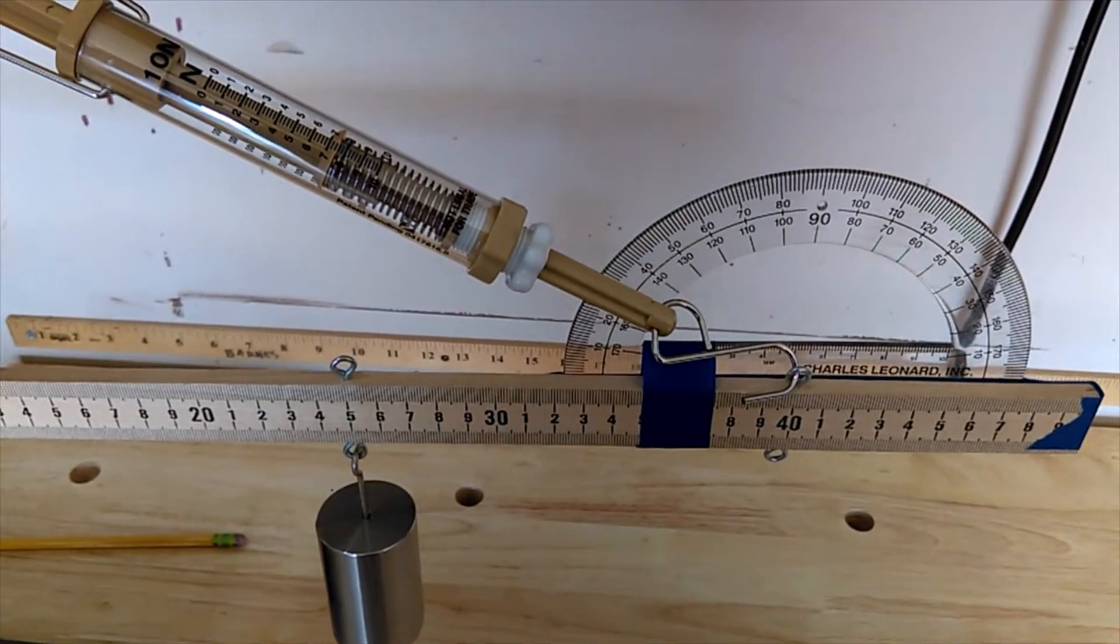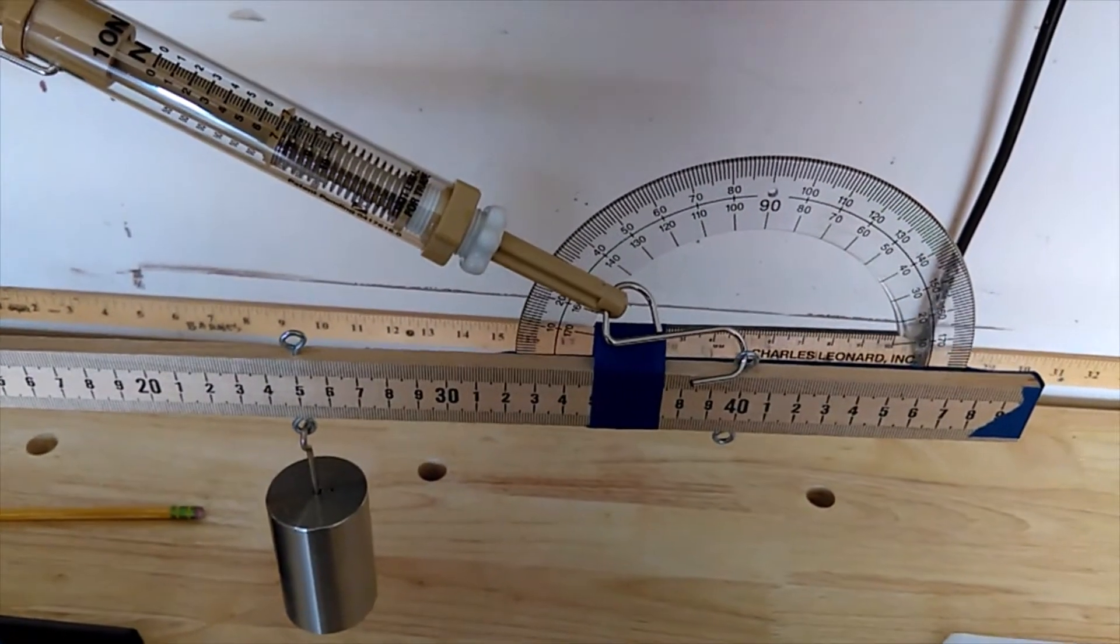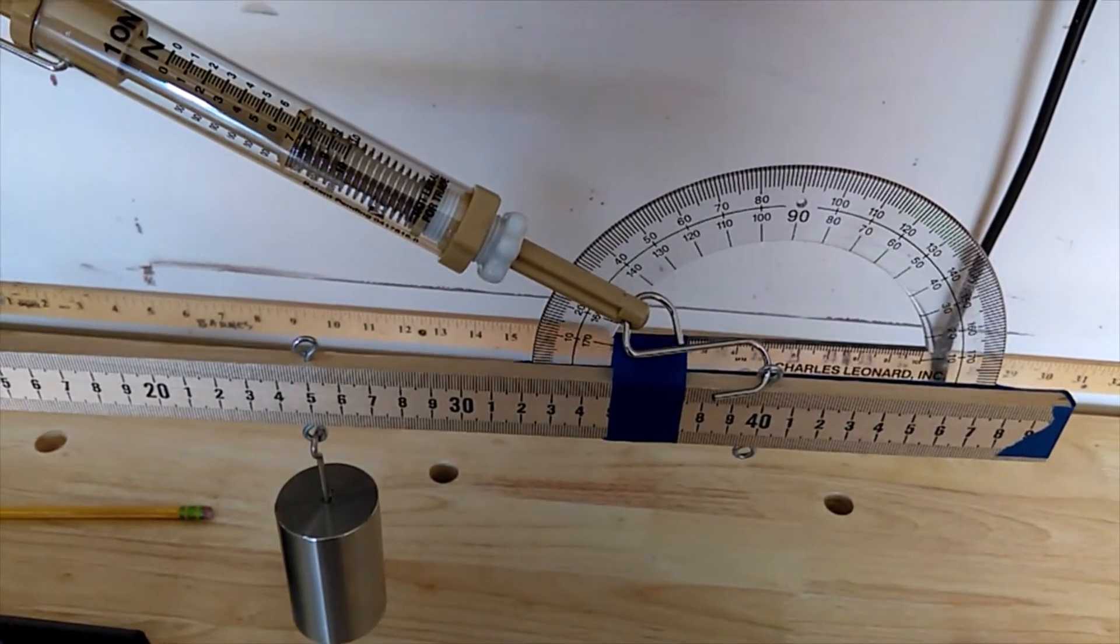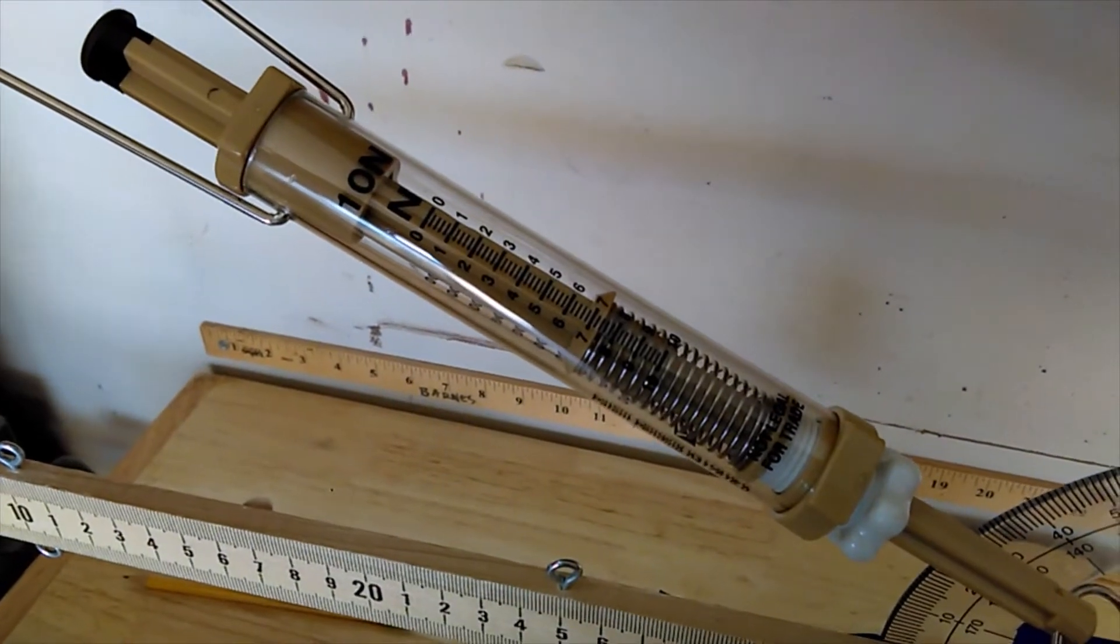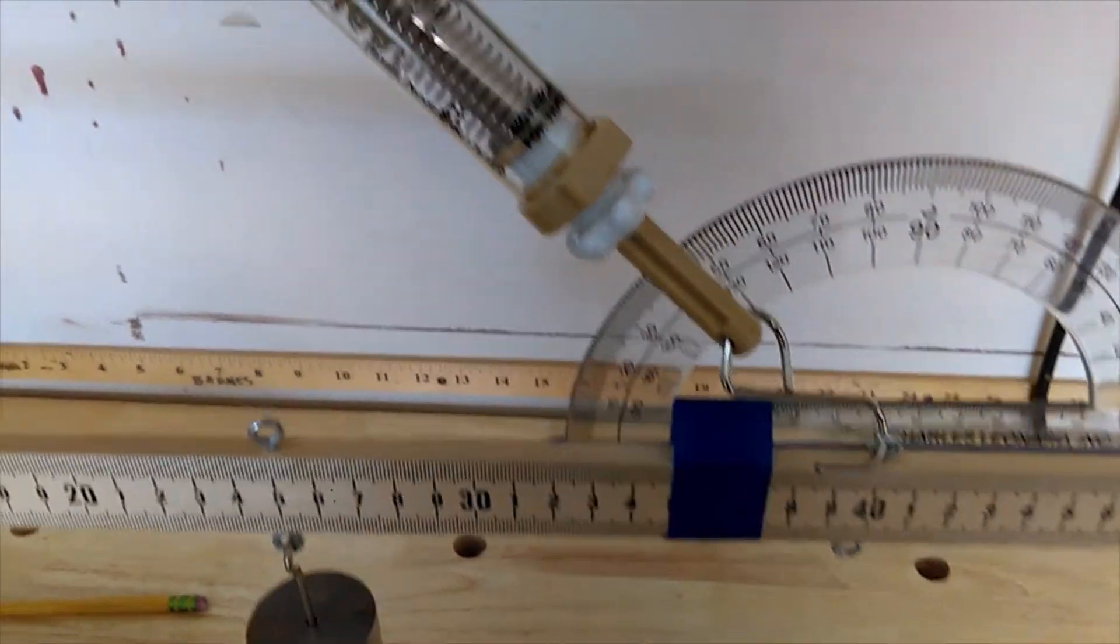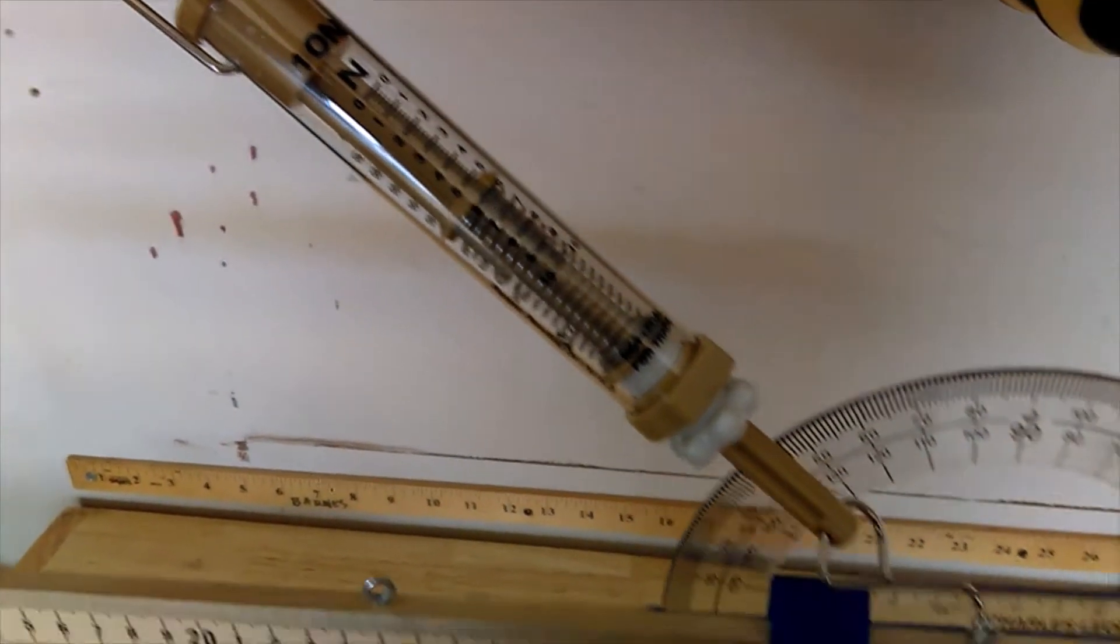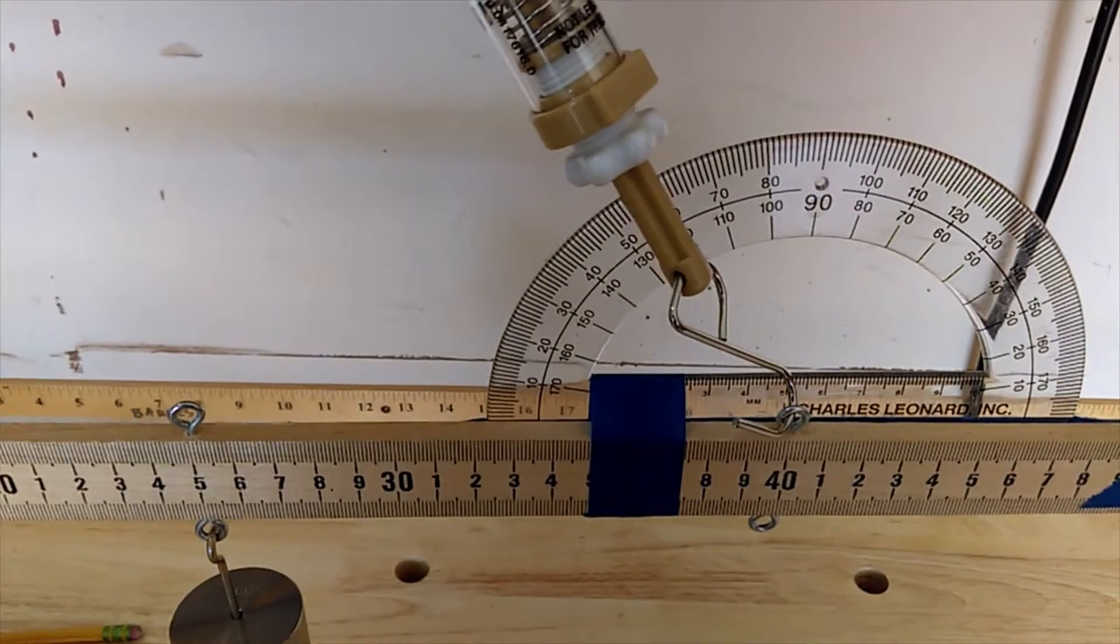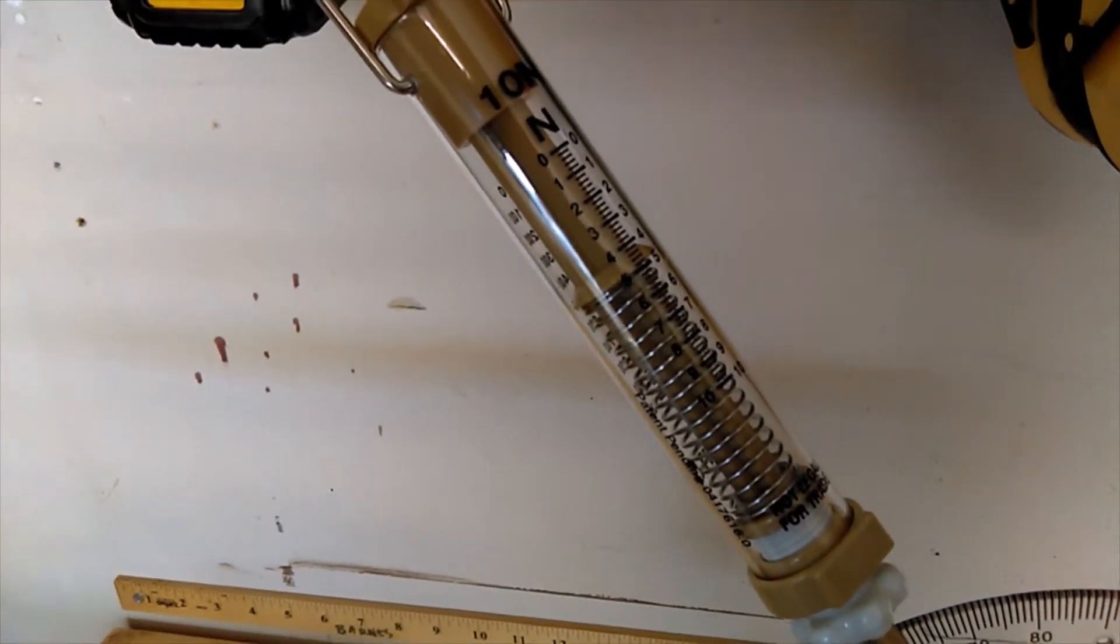We're all set for runs four, five, and six. Got the mass at 25, spring scale still at 40. So for a 30 degree angle we're looking at 7.4 newtons. Bring it up to 45, we're at 6.2 newtons at 45 degrees. And then at 60 degrees we're at 4.8.